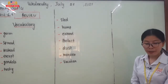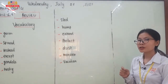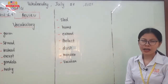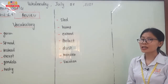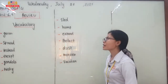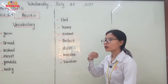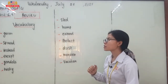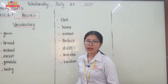The first vocabulary I would like to review today is the word 'germ.' Germ refers to the small bacteria that we cannot see with our own eyes — you have to use a microscope or other tools to see it. Next, we talk about 'spread.' Spread is a verb meaning to give any disease or bacteria to someone else — we call that spread.